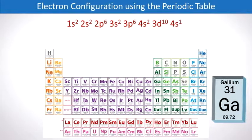And if we clean this up a bit, we have gallium 31 electron configuration shown here.